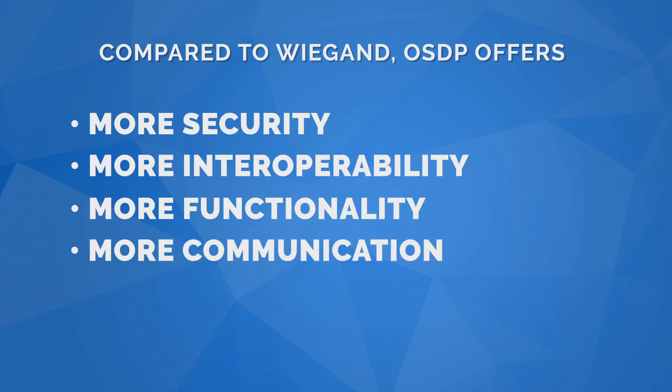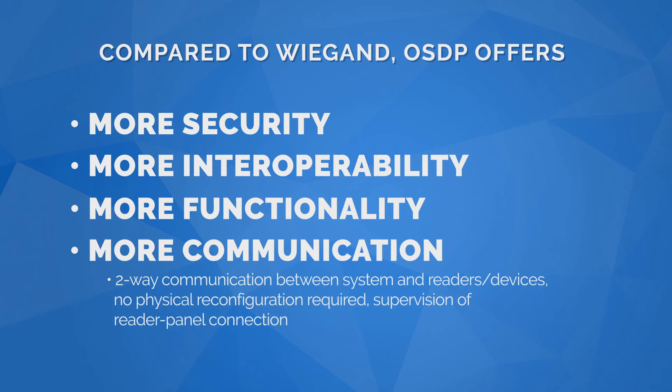More communication. WeGand uses half-duplex communication, in which the reader sends a one-way credential message to the panel. OSDP brings two-way communication between the access control system and the reader or device, for the sophisticated processing required today. With OSDP, the panel can query readers to find out their capabilities, without the need to physically set DIP switches and move wires to reconfigure each device. Supervision is also another benefit of OSDP's two-way communication — if the panel queries the reader and doesn't get a reply, it's alerted that something is wrong.